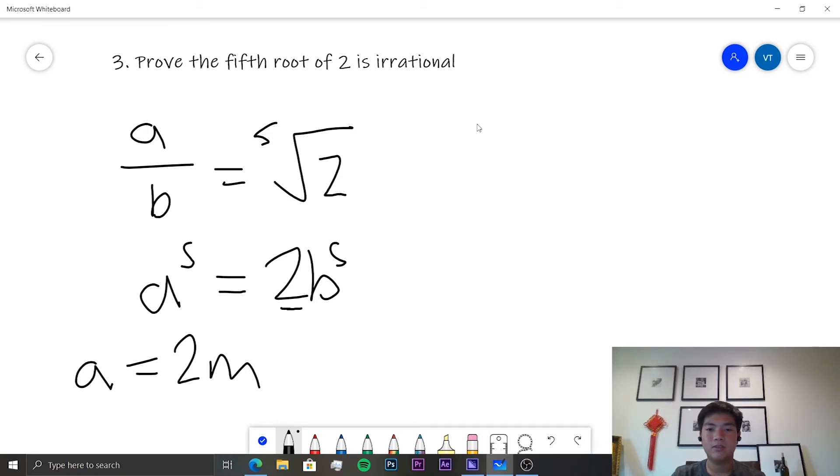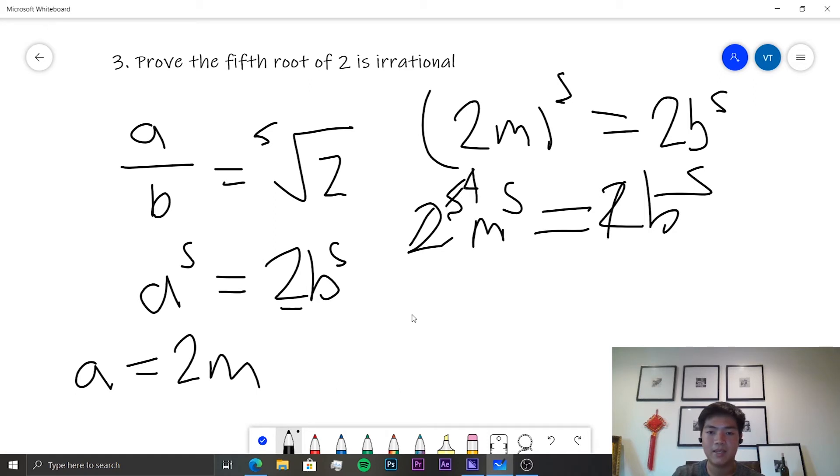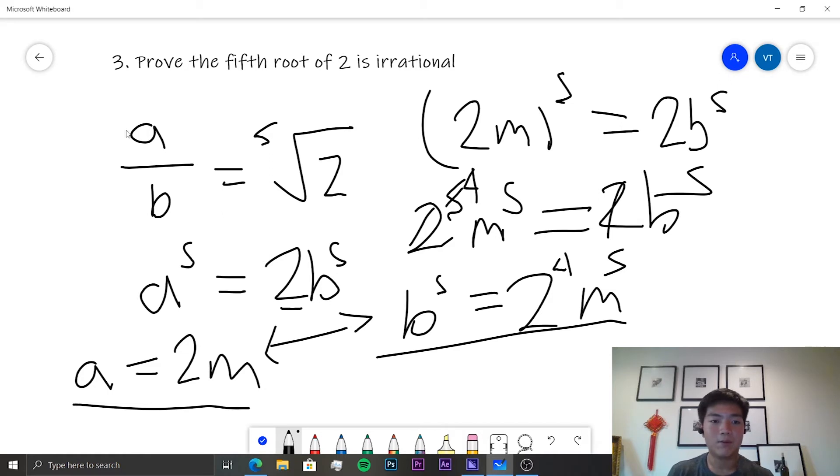But the thing is, if we substitute 2m back into this equation, we get 2m to the 5 is equal to 2b to the 5. Or otherwise, 2 to the 5 m to the 5 is equal to 2b to the 5. And the problem being that this means that b to the 5 is equal to still an even number, 2 to the 4 m to the 5. And since a is equal to an even number and b is equal to an even number, it means that these two share a common factor and they are not relatively co-prime. And so, therefore, there is no rational number that exists.